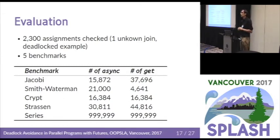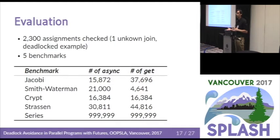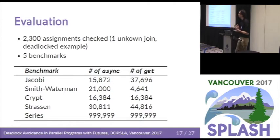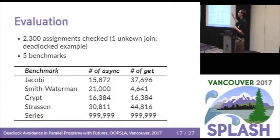We evaluated the tool in two ways. First, we took a large dataset of homework assignments from an undergraduate course where students were learning to program with futures. These are all compute-bound parallel programming applications where you really don't want your homework to wait indefinitely on a deadlock. We were able to find a deadlock — the error was an off-by-one: a missing plus-one that created a data race that then caused the deadlock.